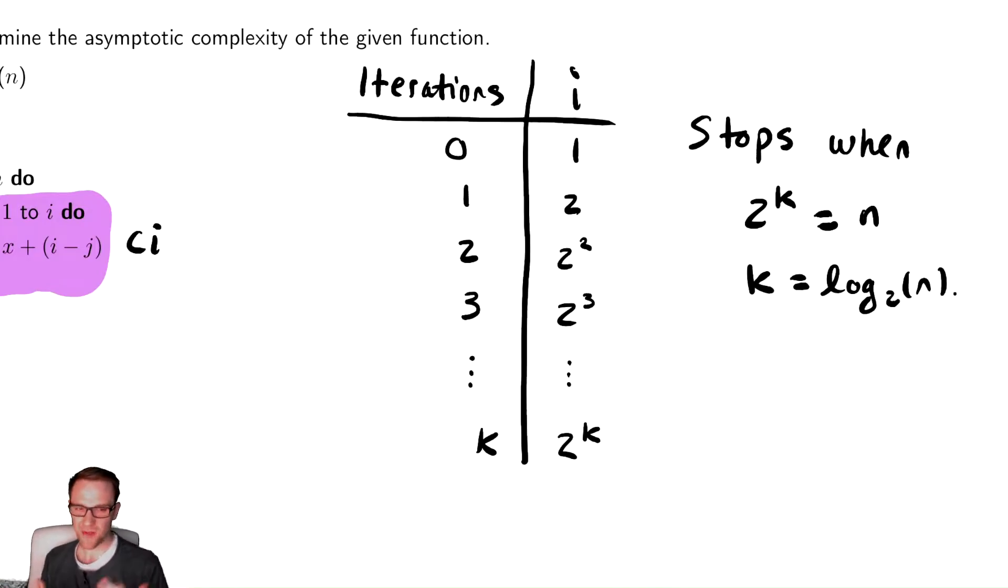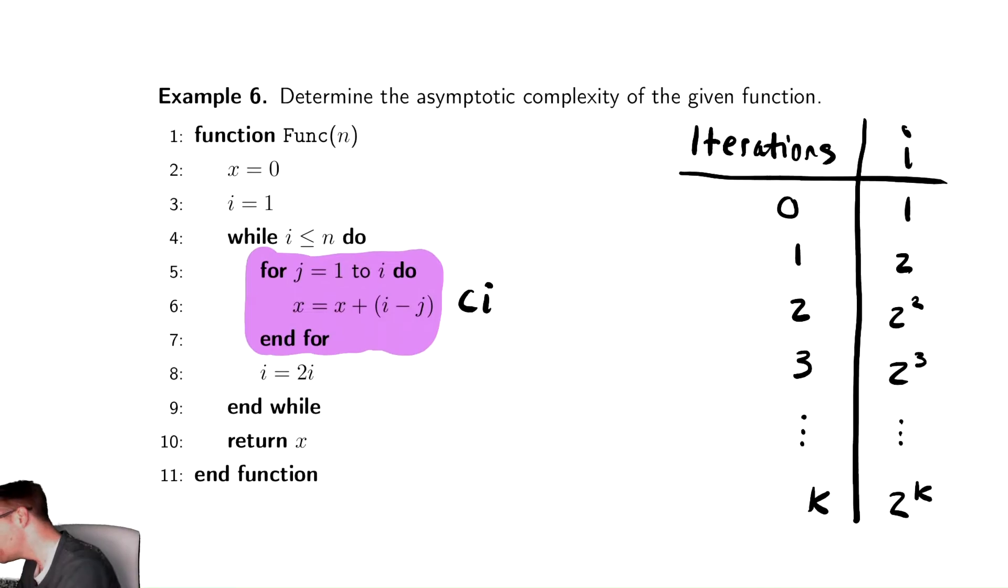And we now have sort of all of the information we can discern without doing some sort of analysis. And things are going to start to get a little weird here, because the inside of the while loop does not take constant time. This is not constant.